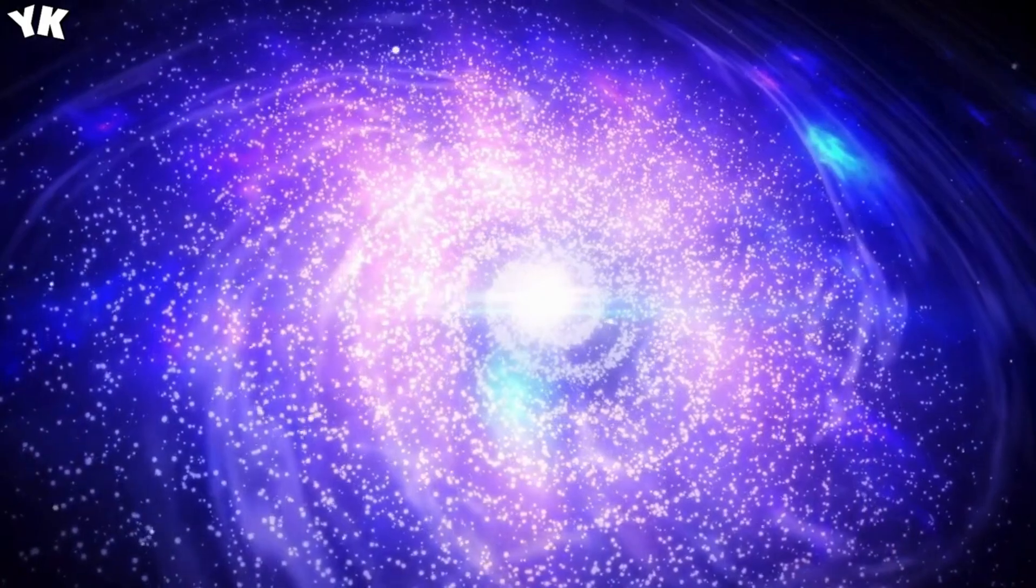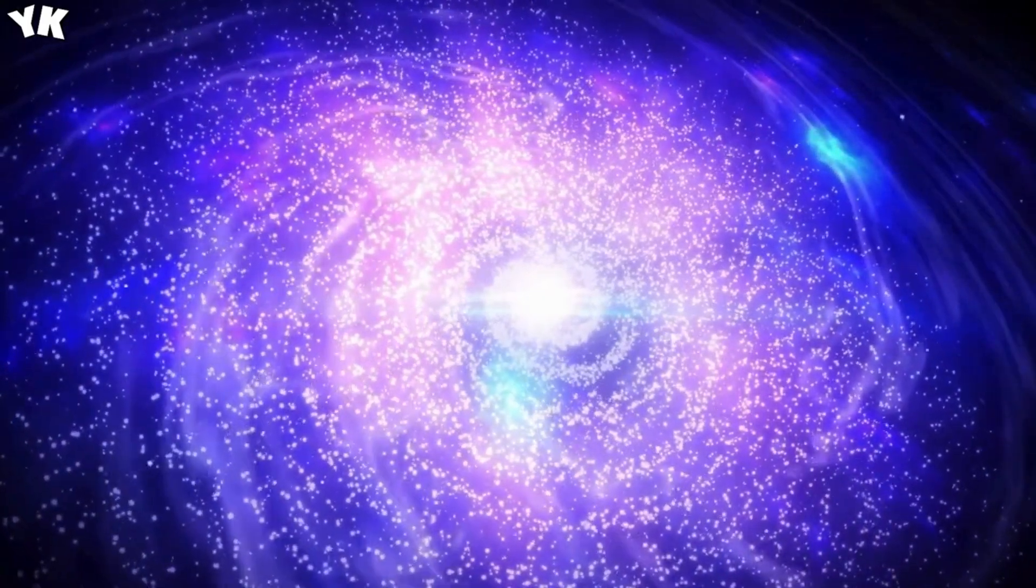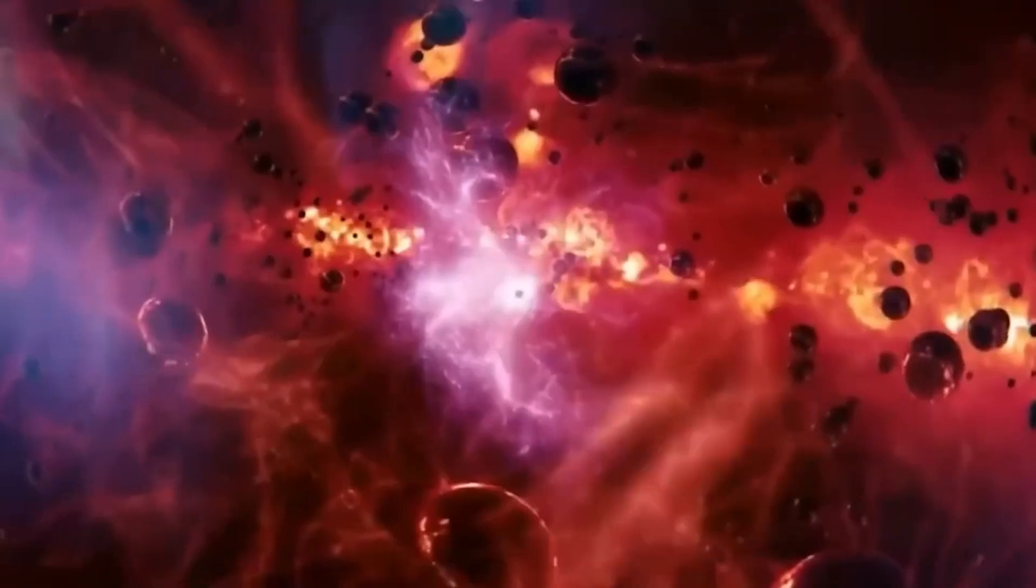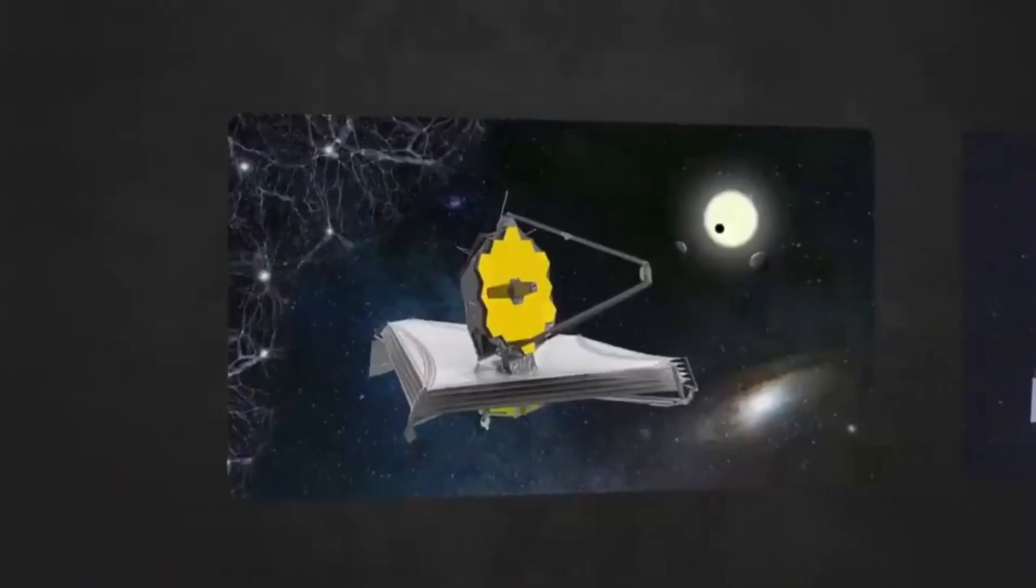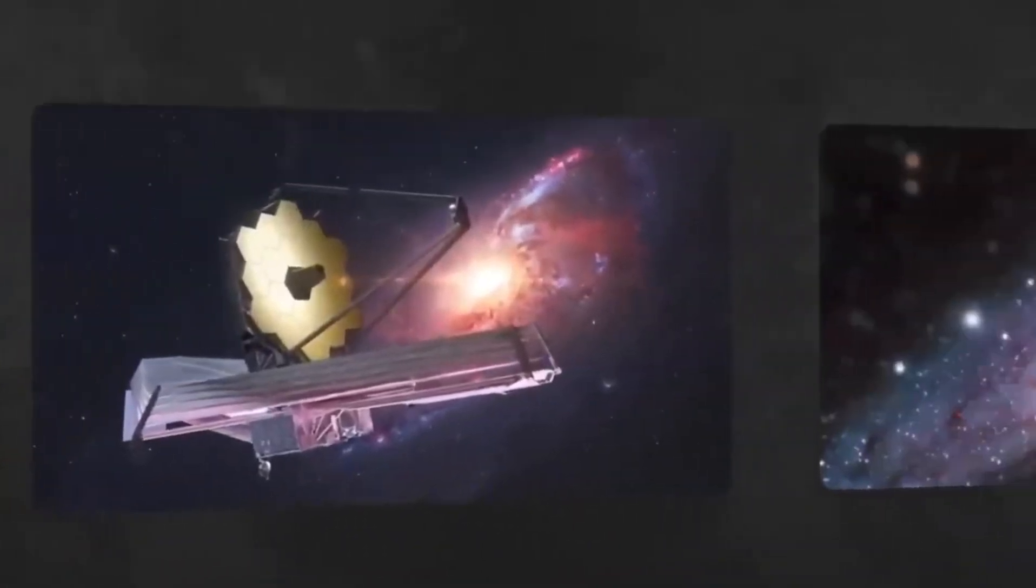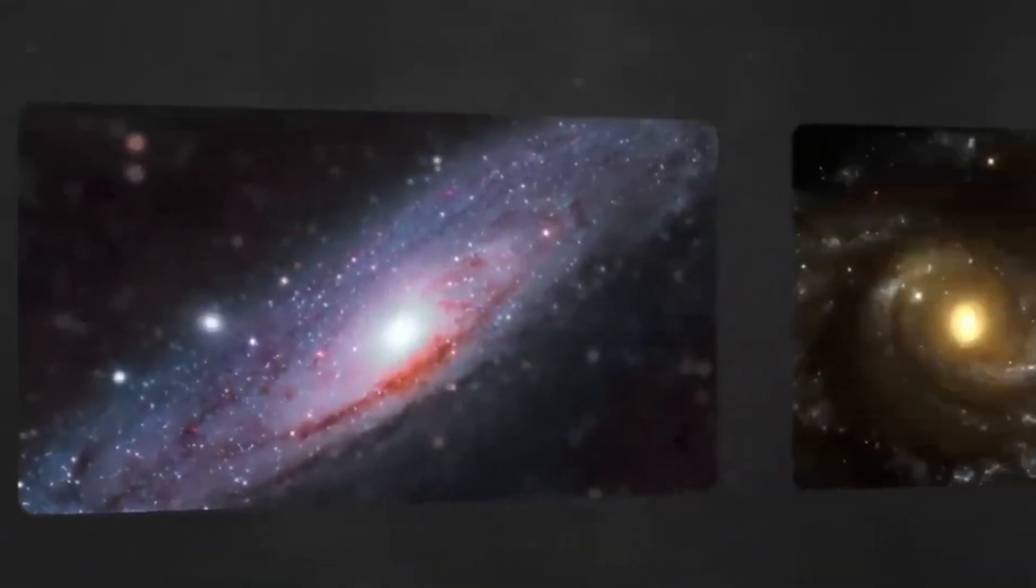That means Proxima Centauri b is a lot closer to its star than Earth is to the Sun. But because the star is a red dwarf, much smaller and cooler than our Sun, its orbit is indeed within the habitable zone of Proxima Centauri. Interestingly, Proxima Centauri b receives about the same amount of solar energy from its star that Earth does from our Sun.